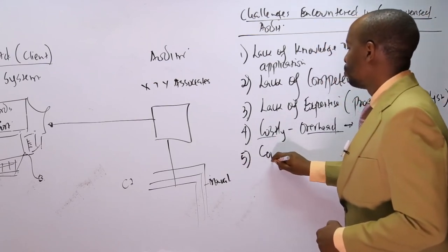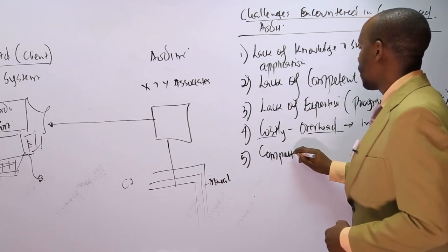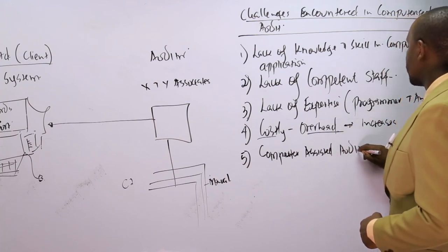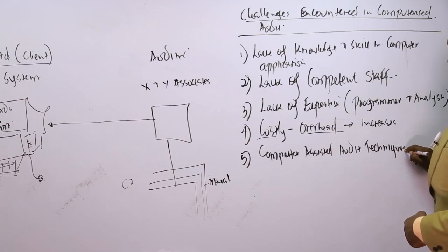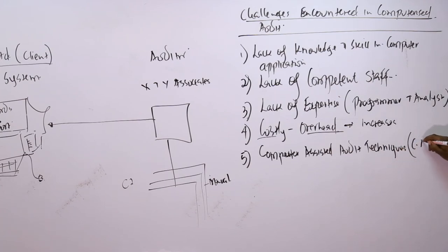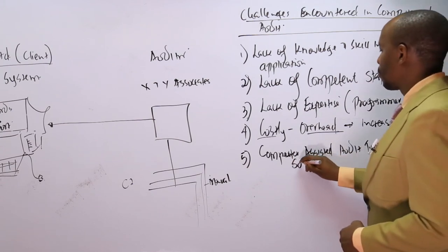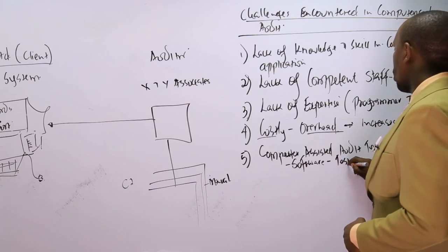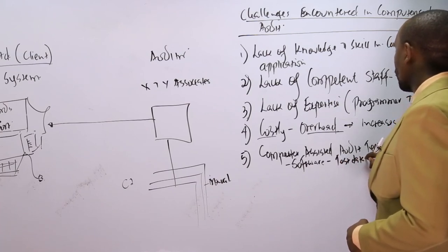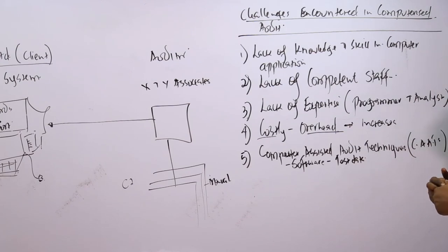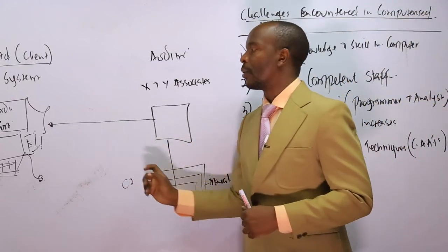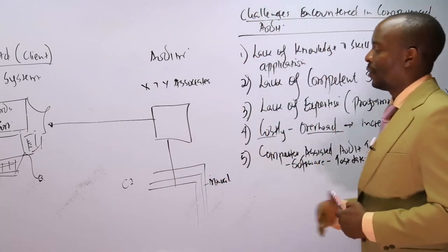Sometimes we use what we call computer assisted audit techniques, known as CAATs — C-A-A-T-S. These consist of: one, audit software; and two, test data. Both require you to design them, or you have to call someone to help you design them. If you're auditing a manual system you don't need CAATs, but if you're auditing a computerized system you do — and that is one of the problems not experienced in a manual system.